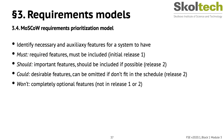The MoSCoW method identifies necessary and auxiliary features for a system. Must features go in the initial release. Should features are important and likely included in release one or two. Could features are desirable but can be omitted if they don't fit the schedule. Won't designates completely optional features agreed to be excluded from the current release.